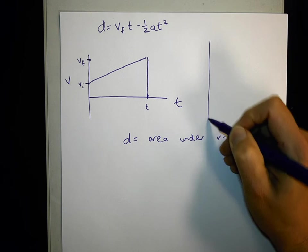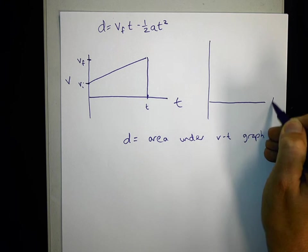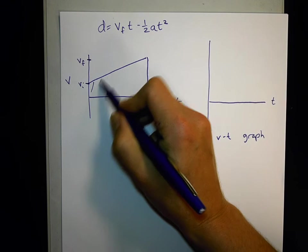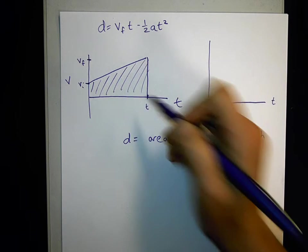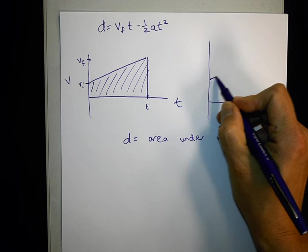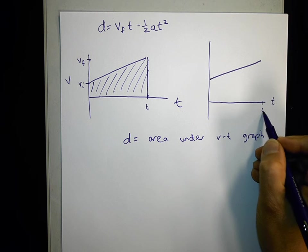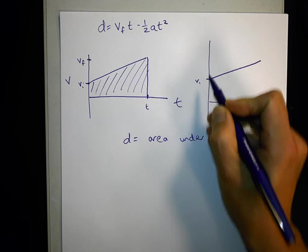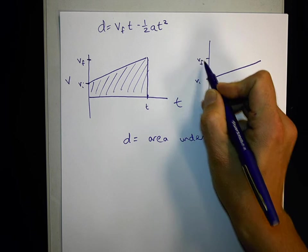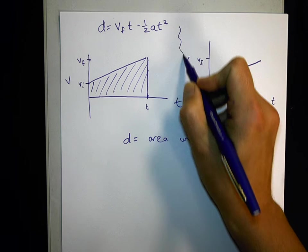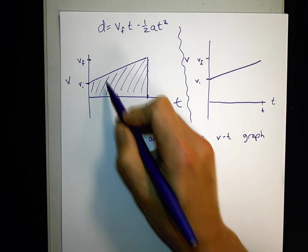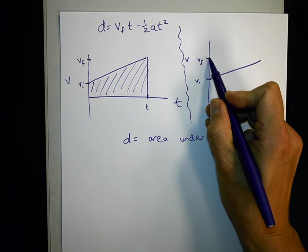And without using the trapezoid equation for areas, I can notice something. This area is basically the same if I redraw this graph in sort of my new version of my velocity graph. This area here is the same as